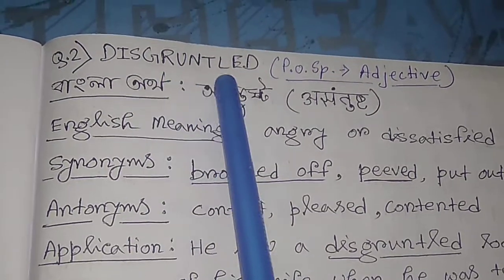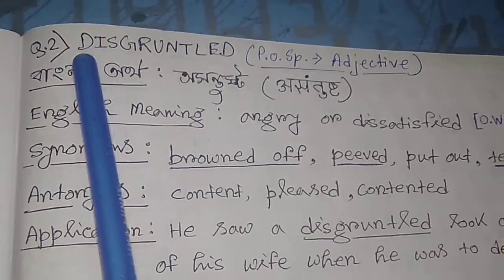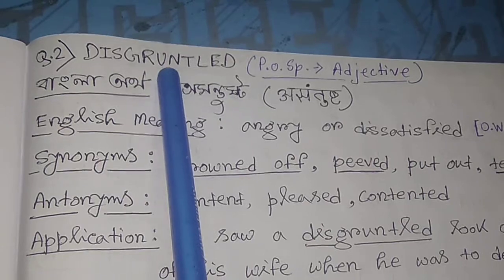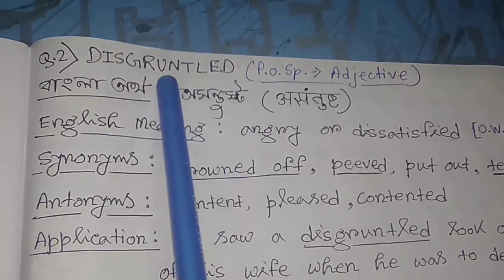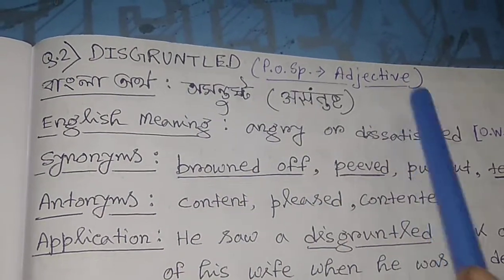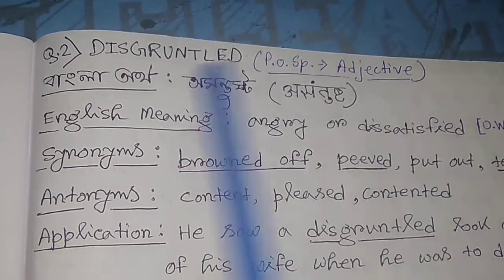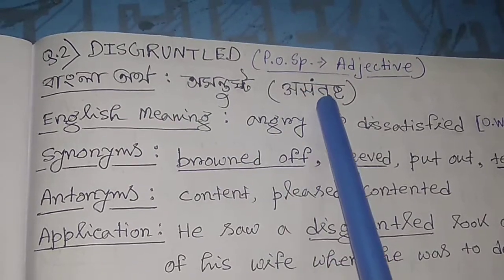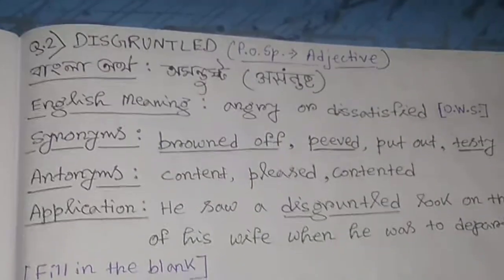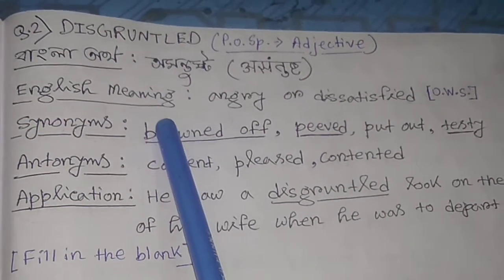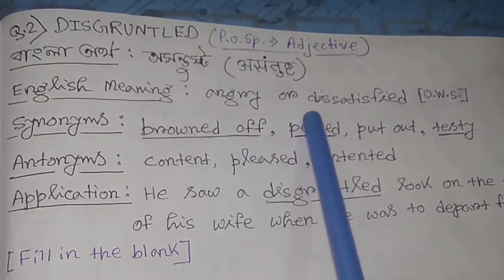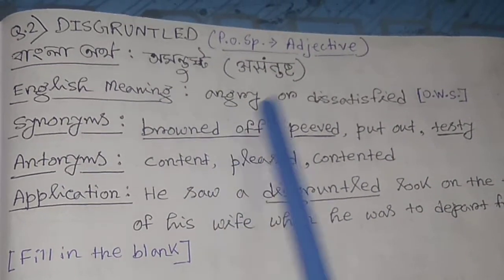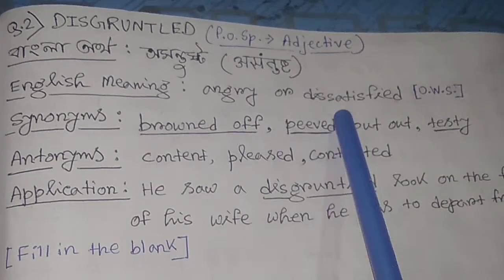The second word is 'disgruntled'. The spelling is D-I-S-G-R-U-N-T-L-E-D. Disgruntled is an adjective meaning angry or dissatisfied.